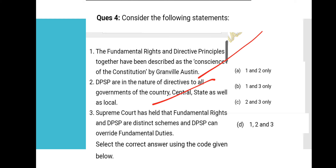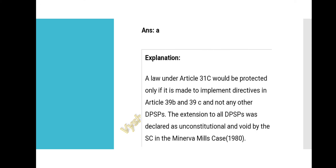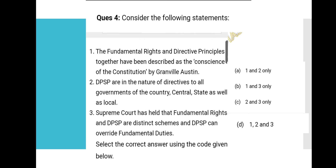Statement 3 is wrong. The Supreme Court held that law under Article 31C would be protected only if made to implement directives in Articles 39B and 39C, not all DPSPs. The extension to all DPSPs was declared unconstitutional and void by the Supreme Court in the Minerva Mills case of 1980. So Option A, that is 'one and two only,' is the correct answer for question 4.